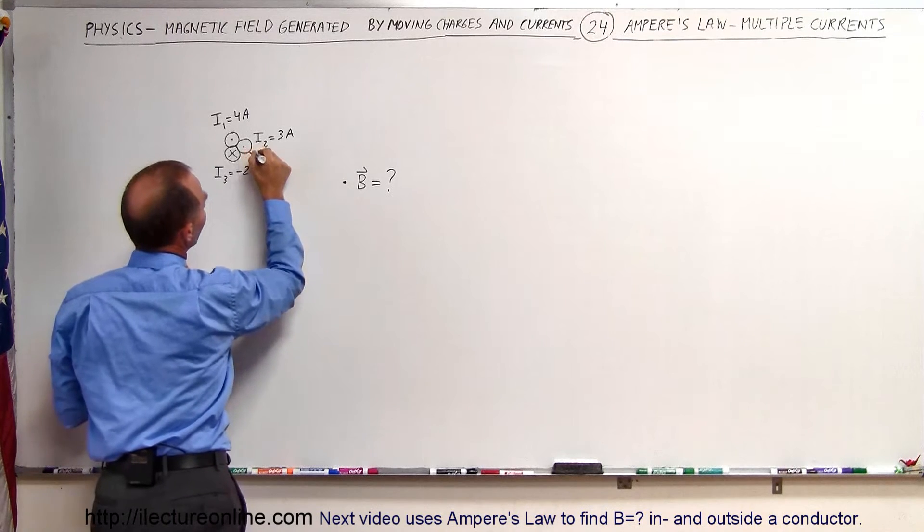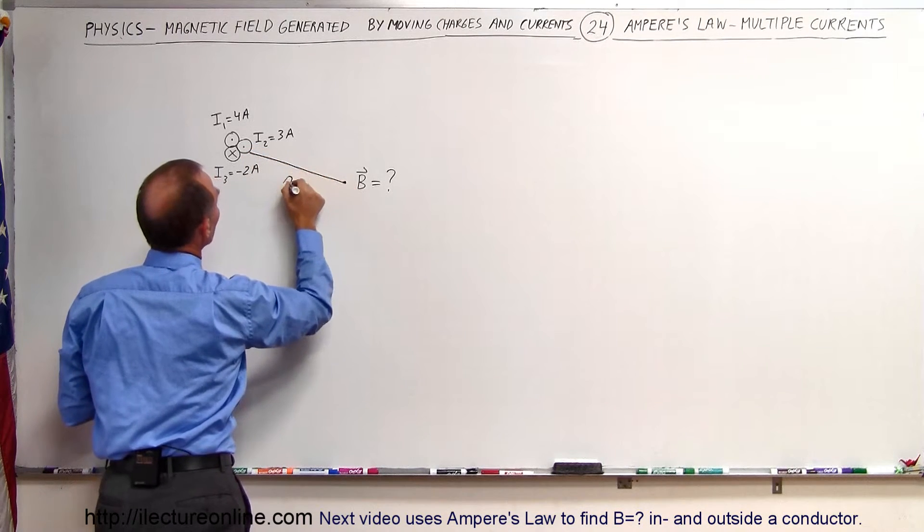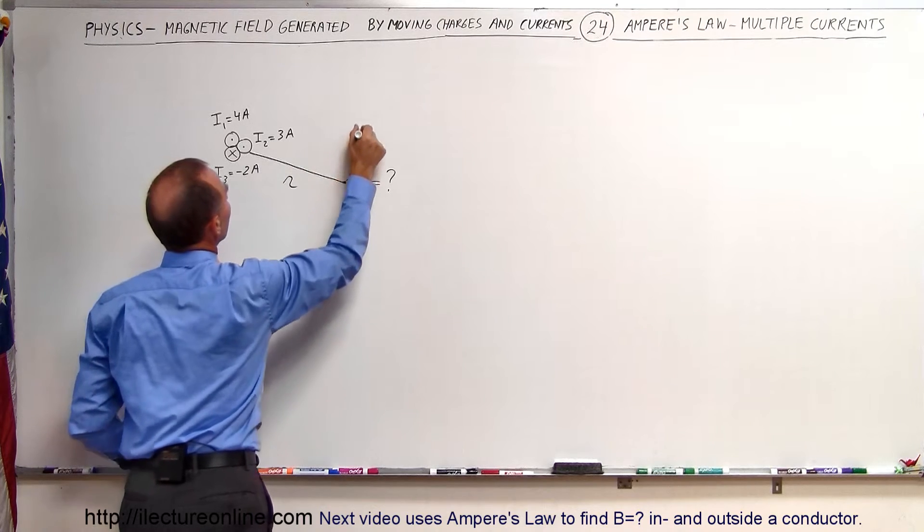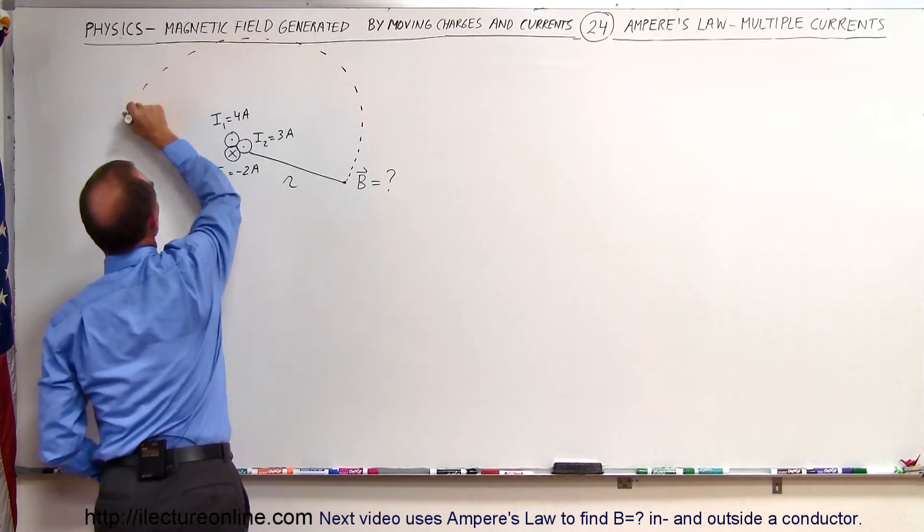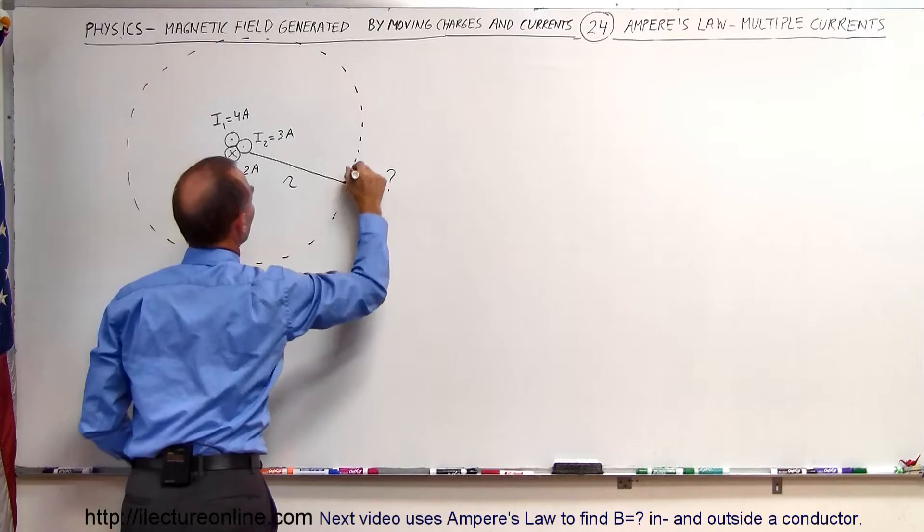So let's do that. Notice that this is the radius right there. So we need to draw a circle of that radius all the way around. Like so.